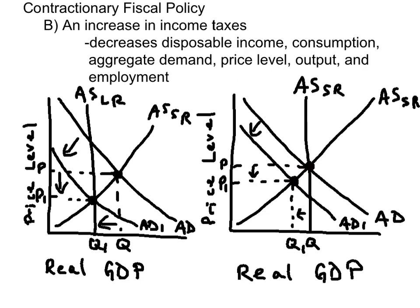A second tool of a contractionary fiscal policy is an increase in income taxes. If the government increases personal income taxes, that will reduce disposable income and therefore reduce consumption. The decrease in consumption will shift aggregate demand to the left, reduce the price level, reduce the output, and then cut some employment.